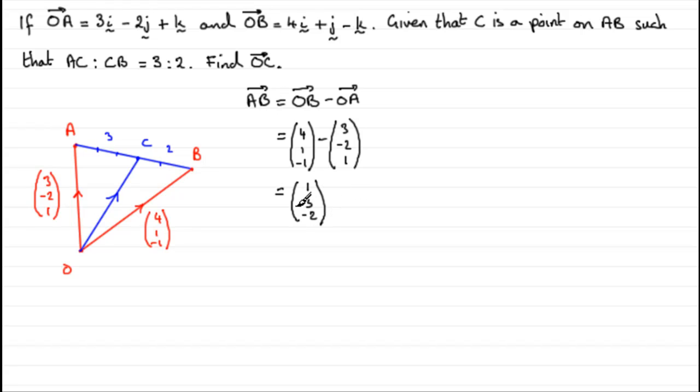Now that we've got AB, we can get the vector AC. So what is AC going to be? It relies on AB because we now know that it is 3 out of 5 parts, 3 fifths the way along AB. So we've got that AC is 3 fifths AB. We can write that one in then as 3 fifths of 1, 3, minus 2. So 3 fifths of the 1 is going to be 3 fifths, 3 fifths of the 3 is going to be 9 fifths, and 3 fifths of the minus 2 is going to be minus 6 fifths. So there's our vector AC.